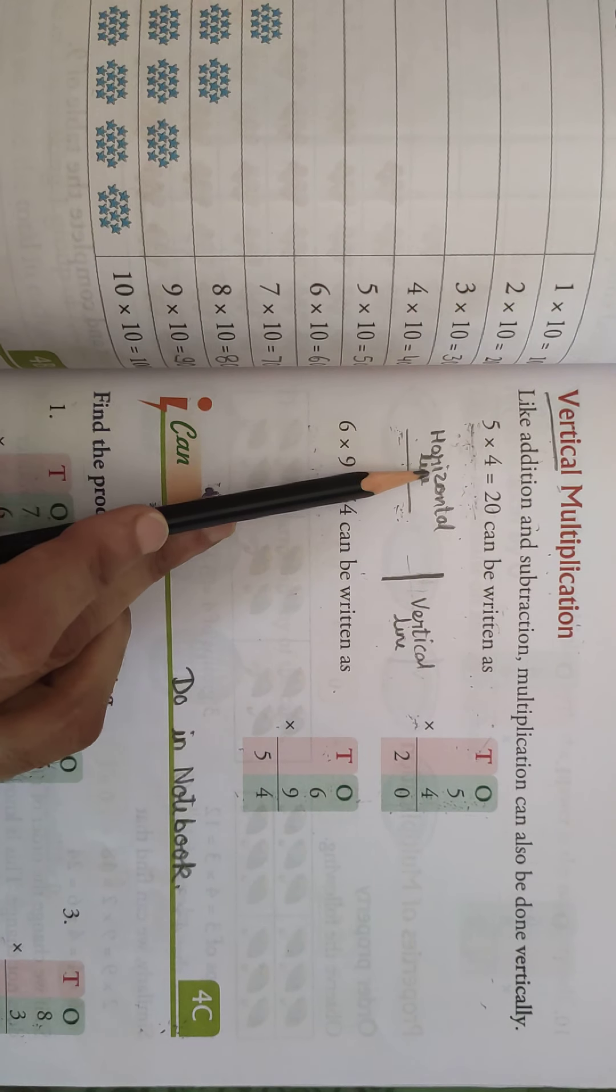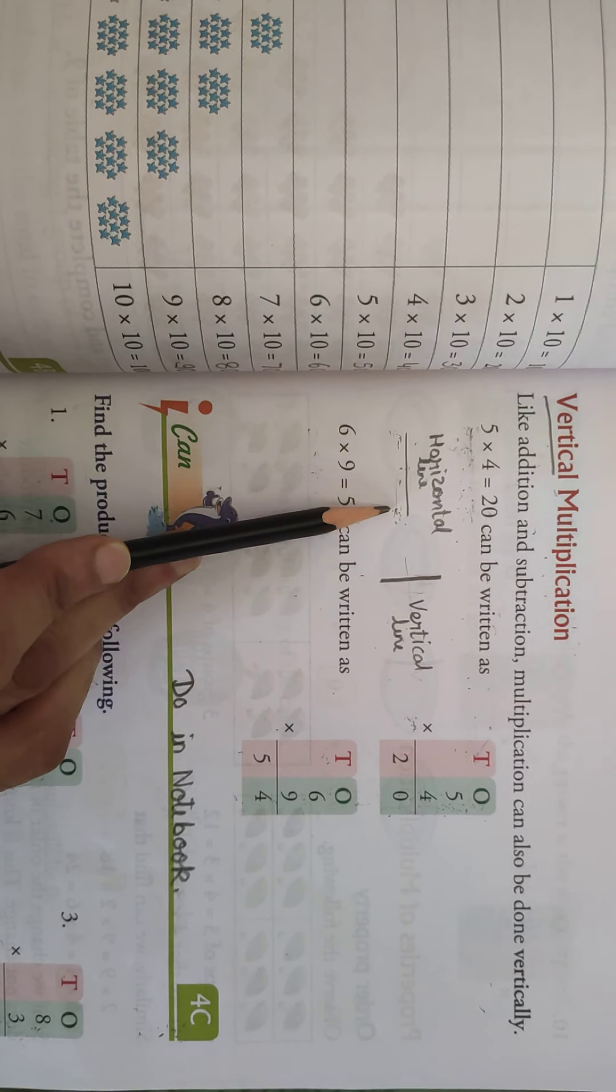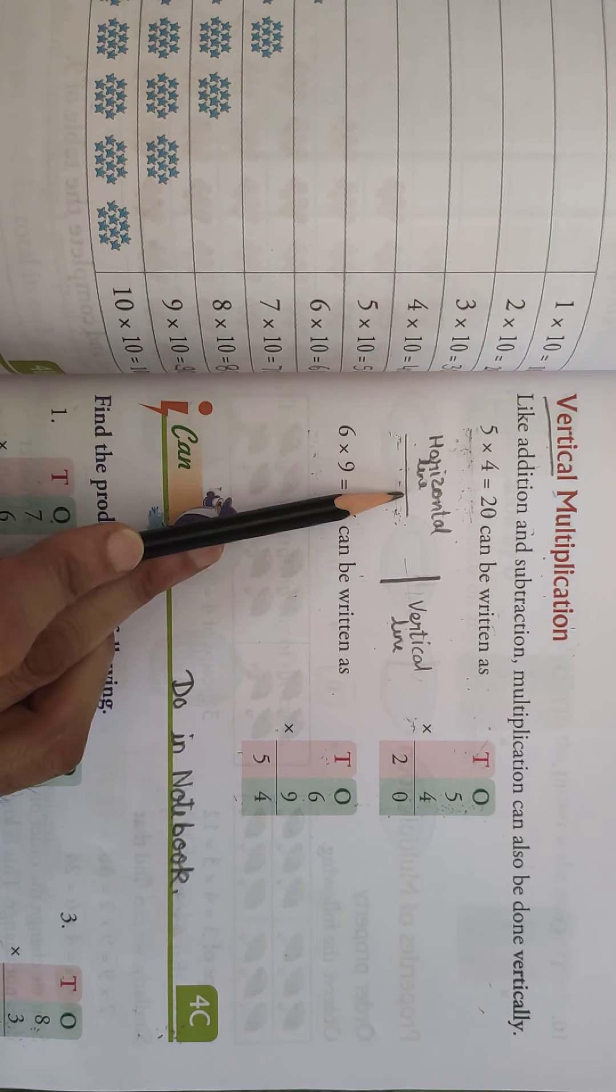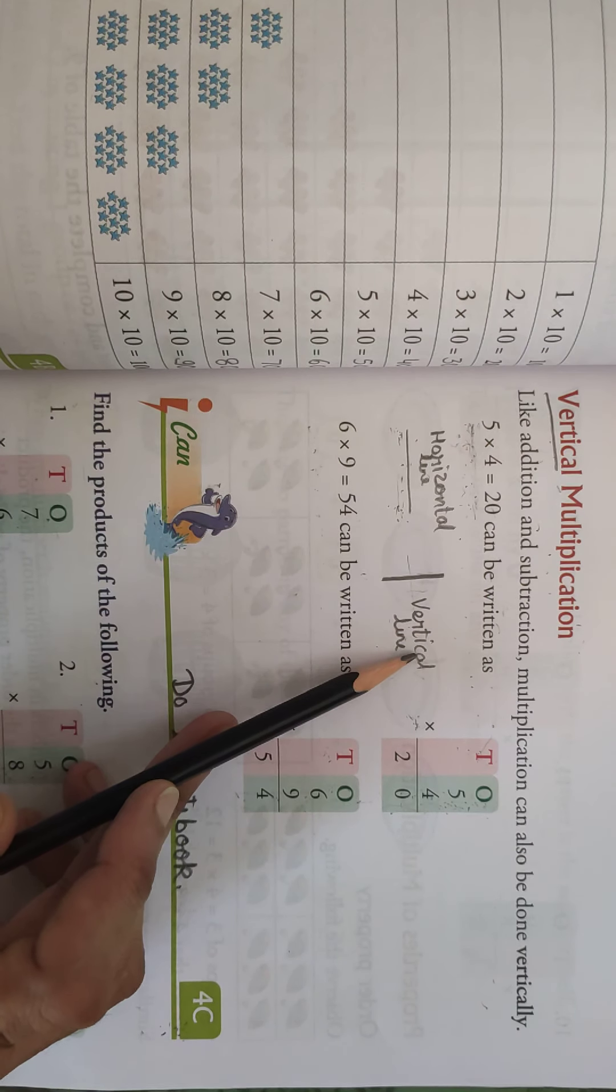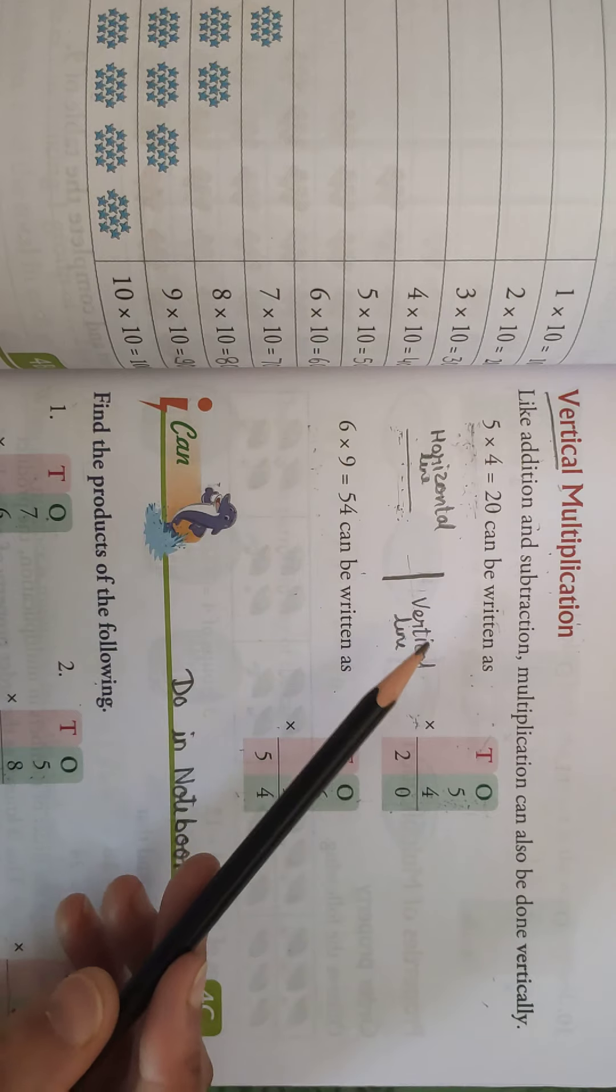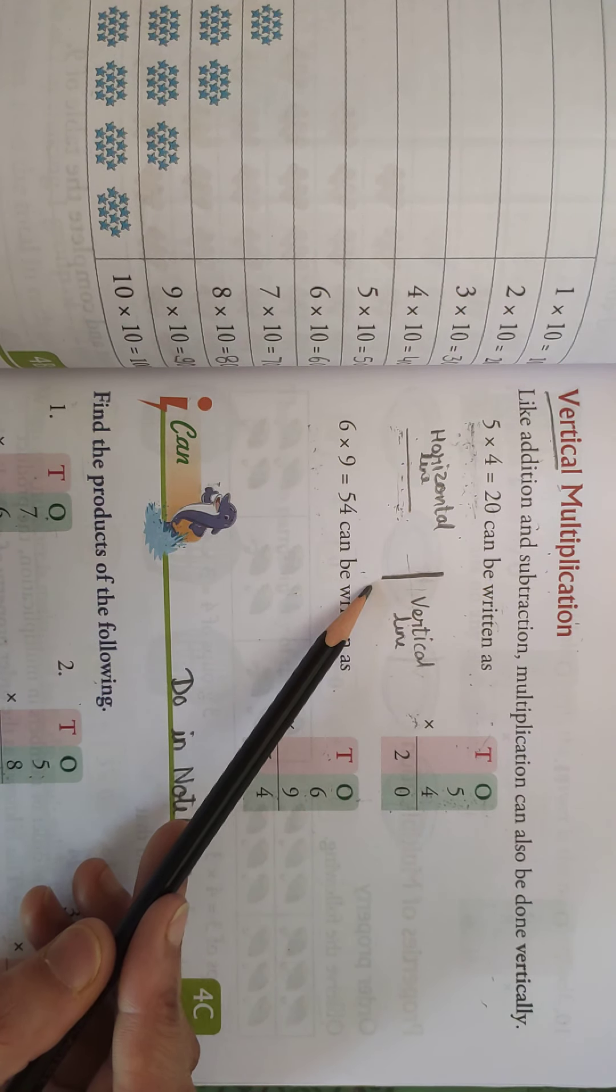Okay, so these are the line, yeh hai horizontal line, joki lati hui hai. Okay, jab hum sote hain toh kya hota hai? Horizontally hum sote hain. And jab hum khadhe rahate hain, ya when we stand, it is vertical position.